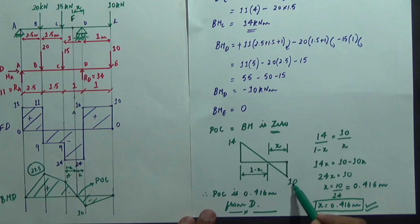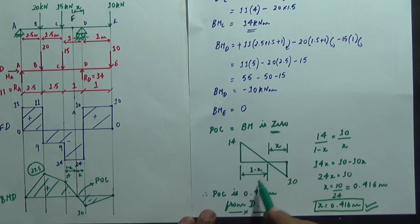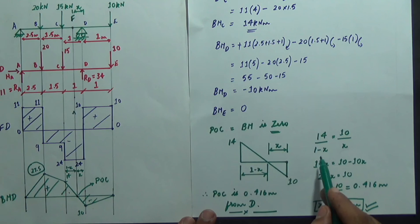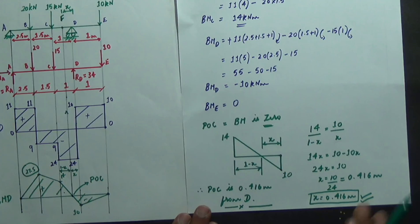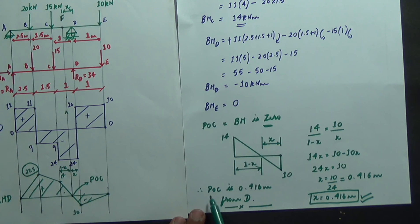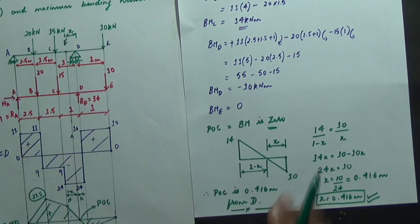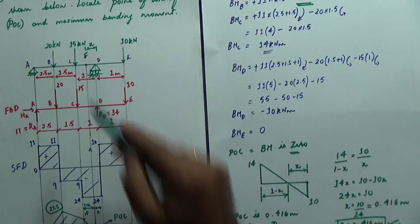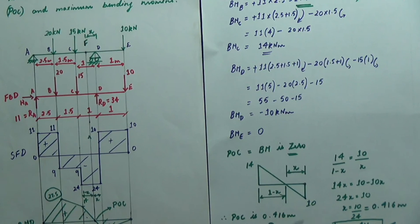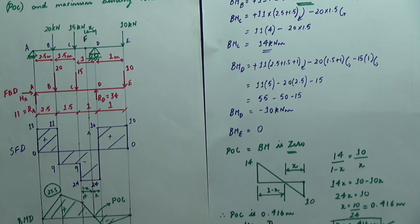Using similar triangles: 14 / (1 − x) = 10 / x. Simplifying gives x = 0.416 meters. Write in sentence form: the point of contra flexure is 0.416 m from point D. This completes the cross-verification and summary of the problem.